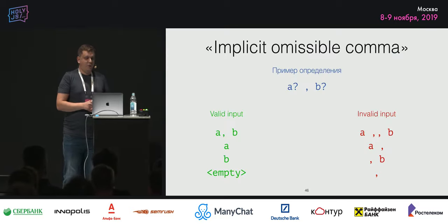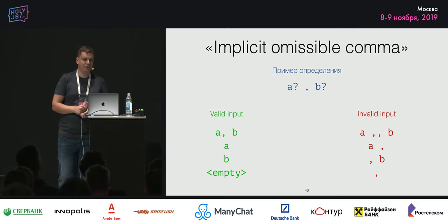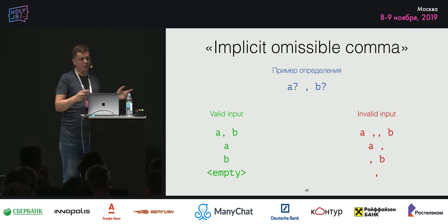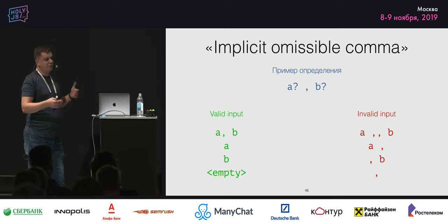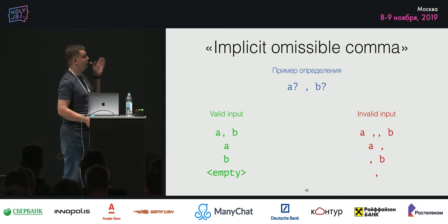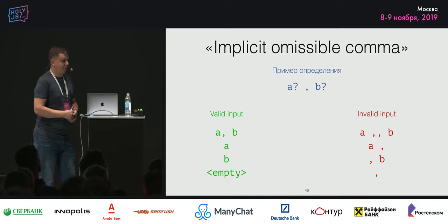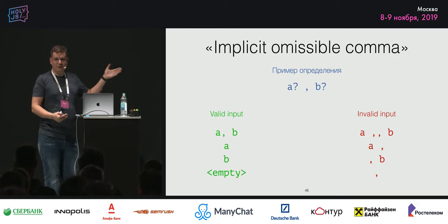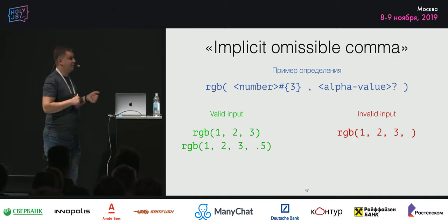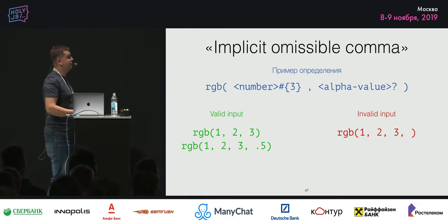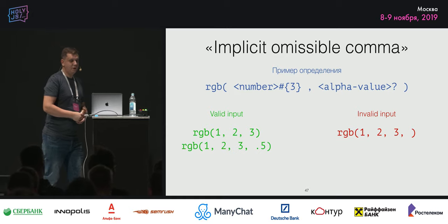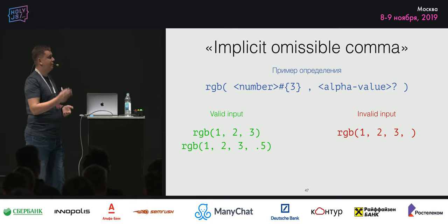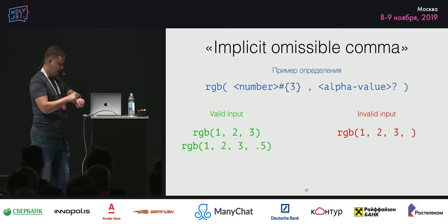Есть нюансы, и их достаточно много. Обозначу их как особые правила CSS Definition Syntax. Например, есть правило — implicit omissible comma, то есть неявно опускаемая запятая. Если у нас есть паттерн: a и b разделены запятой, и оба значения могут быть опциональными, то валидные значения — это a,b, только a, только b и пустой ввод. А вот две запятые подряд или висячая запятая — так нельзя. Это неправильно. Для нас, для людей, это выглядит очень логично. Поэтому, чтобы не нагружать синтаксис, и сделали такое правило. Другой пример — с функцией RGB: стоит компонент alpha value и вопросик. Таким образом, значение можно опускать, но если опускаем — запятая у нас тоже уходит. Оставить висячую запятую нельзя — это будет неверный синтаксис.